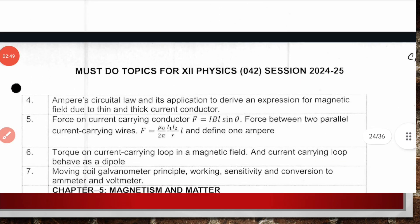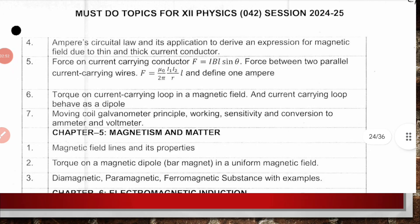From the same chapter, Ampere's circuital law and its application to derive an expression for magnetic field due to thin and thick current conductors, force on current carrying conductor F equals IBL sin theta, force between two parallel current carrying wires to define 1 Ampere, torque on current carrying loop in a magnetic field with current carrying loop behaving as dipole, and moving coil galvanometer including principle, working, sensitivity and conversion to ammeter and voltmeter.